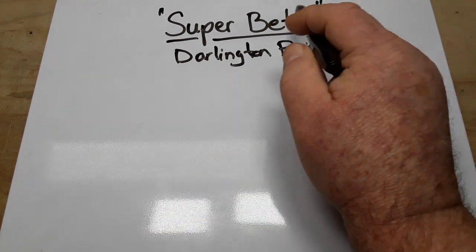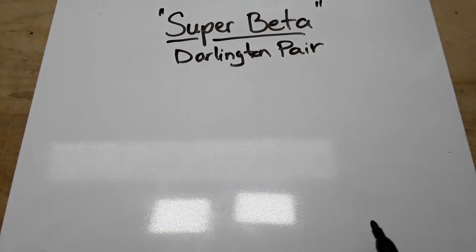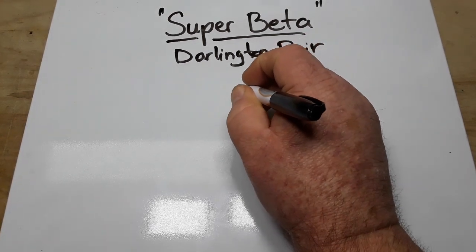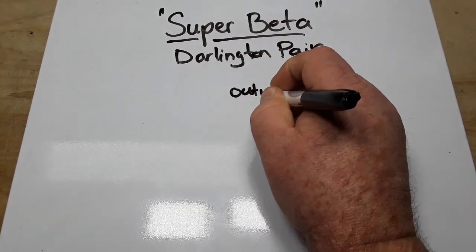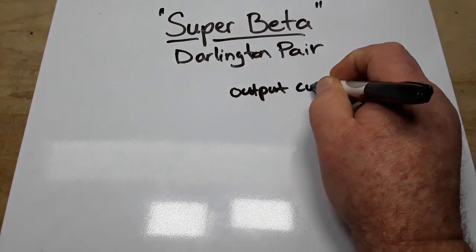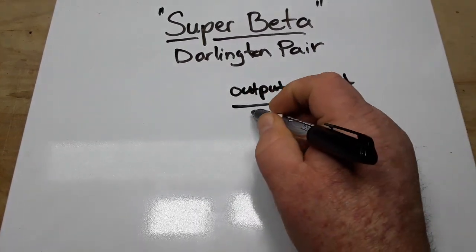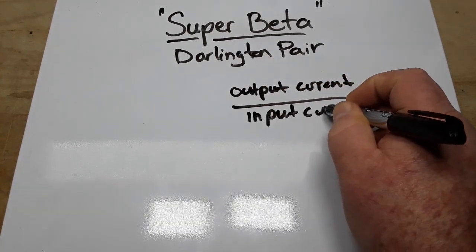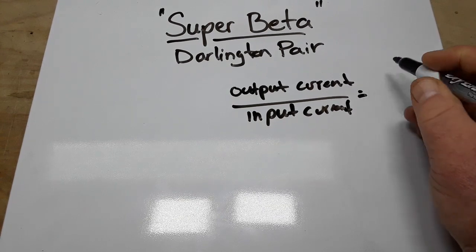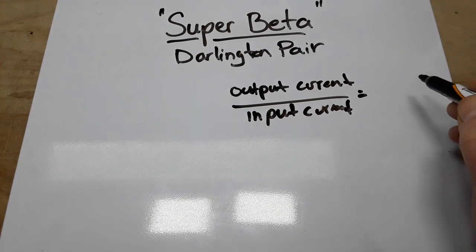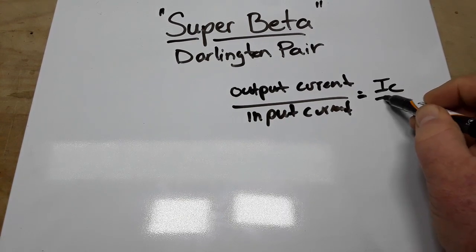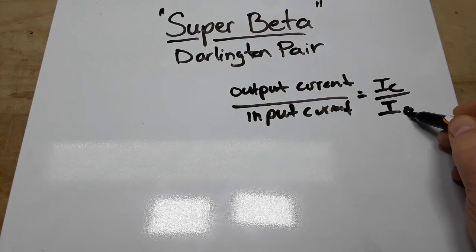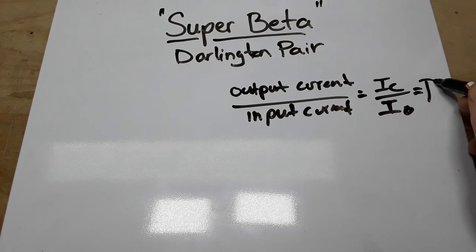So beta is what we call the gain of the transistor, and it is as simple as finding the output current divided by the input current. So that would be IC over IB, and that gives us our beta.